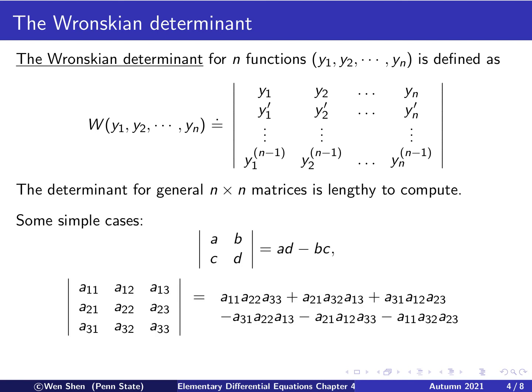I hope we remember how to compute the determinant for a general n×n matrix, though that computation can be lengthy. Let me recall some simple cases for small n. For n=2, we have a 2×2 matrix with entries A, B, C, D. The determinant is the product of the main diagonal, AD, minus the other diagonal, BC.